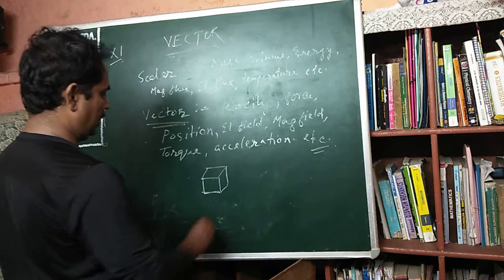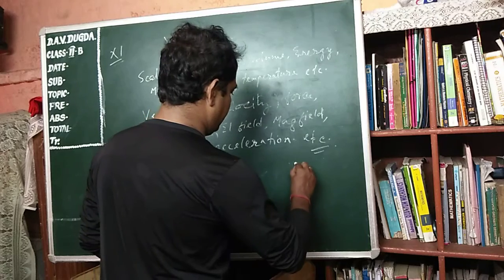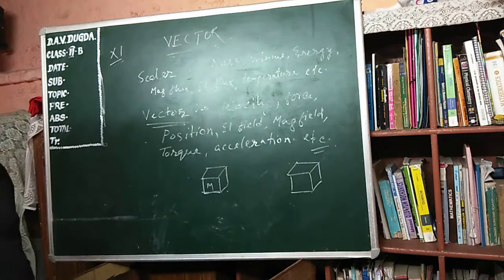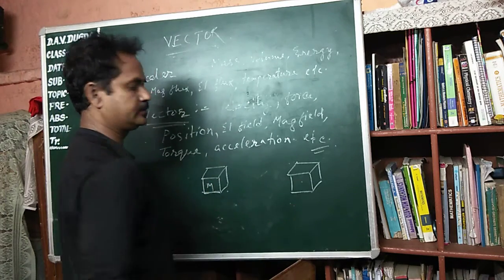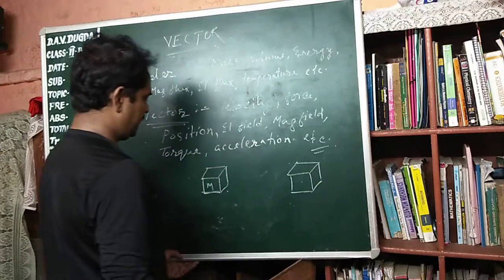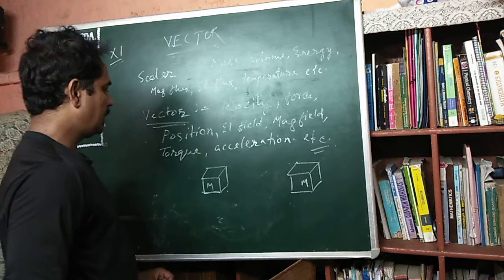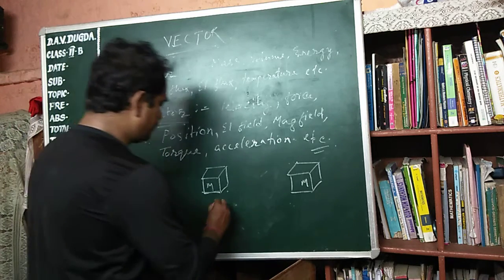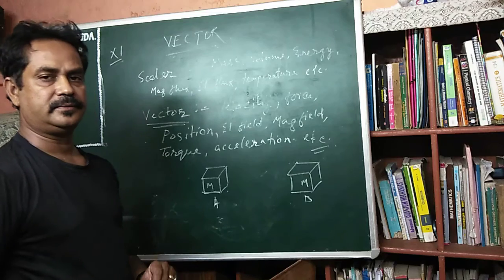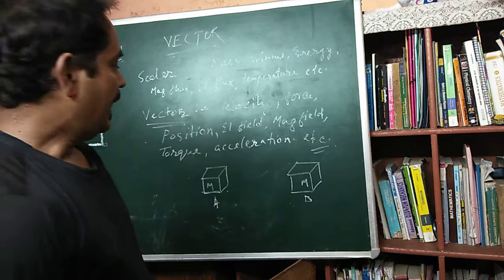Consider a body of mass M that you need to displace. To displace this body from here to here, you need to apply a force. And when this body is displaced, its mass will not change. Now, if you are told to move this body from A to B, you know you have to apply a force, and that force will bring this body from here to here. But knowing just the magnitude of force is not sufficient.